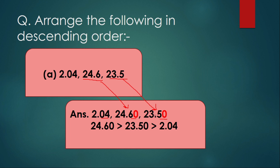The second step is to check the whole number part. Here the whole number parts are 2, 24, and 23. By observing these, we can easily determine the order. 24 is the greatest, so 24.60 comes first. 23 is the next, so 23.50 comes second. And 2 is the smallest, so 2.04 comes last. So the descending order is: 24.60 > 23.50 > 2.04.